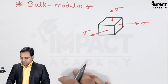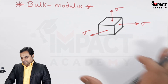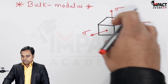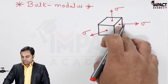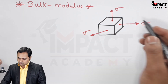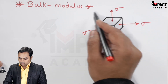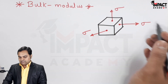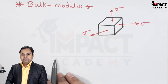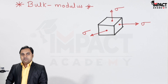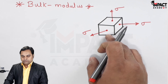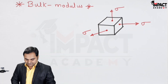Bulk modulus can be explained with the help of this diagram. In this diagram there is an element which is subjected to three like stresses — the values are the same and even the notations. For example, all the stresses here are tensile. So when a member is subjected to equal stresses, also called as direct stresses, then the ratio of the direct stress to the volumetric strain is called as bulk modulus. Because of these stresses, the volume of the element is going to change.